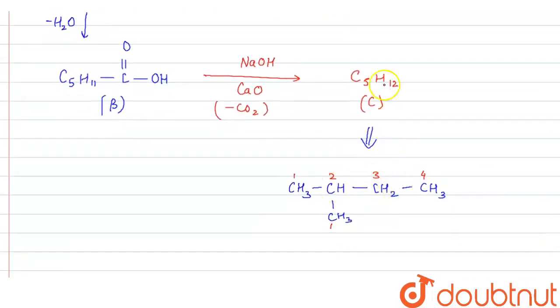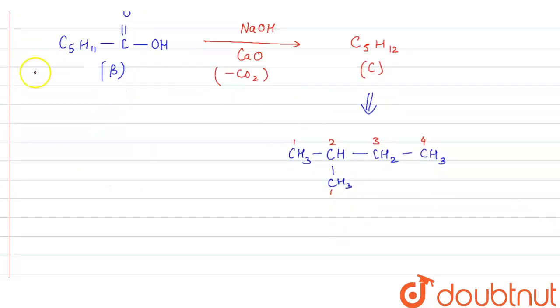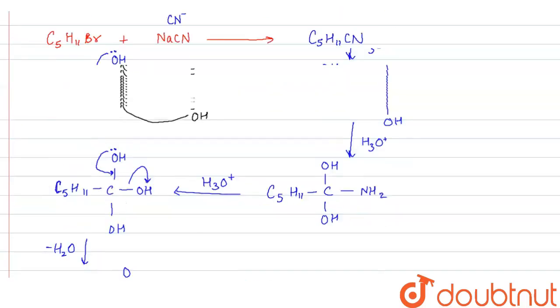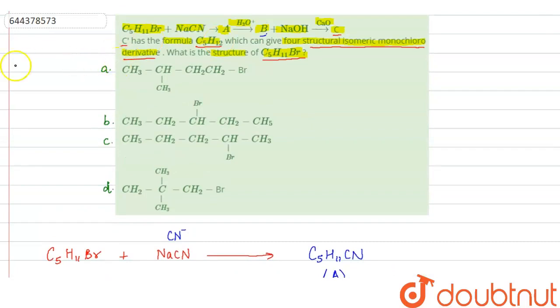So, if this is the C5H12, then C5H11Br will be CH3, CH, CH3, CH2, CH2Br. So, this will be the structure of C5H11Br and it is given in option A. So, here option A will be the correct option. So, this is the answer. Option A is the answer. Thank you.